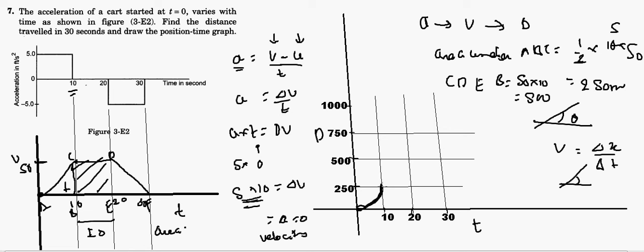When velocity is constant, the position-time graph will be a straight line — because there's no change in slope. So during the constant velocity segment, the graph is a straight line. Before it was a parabolic increasing curve, then it becomes a straight line during constant velocity.